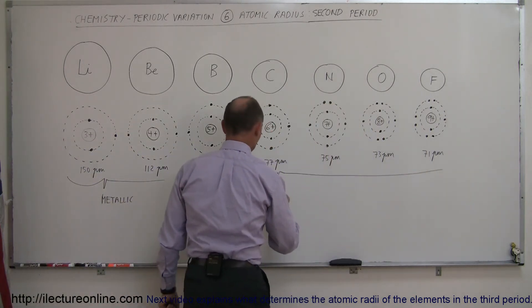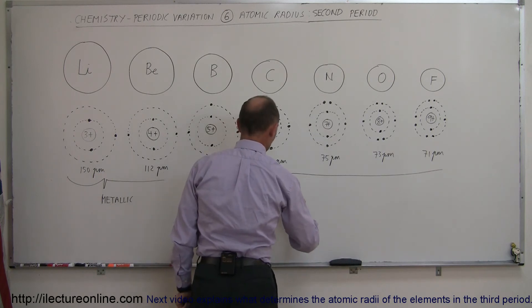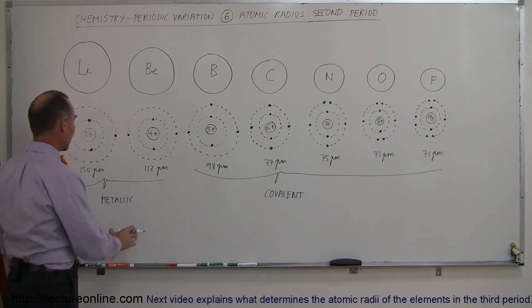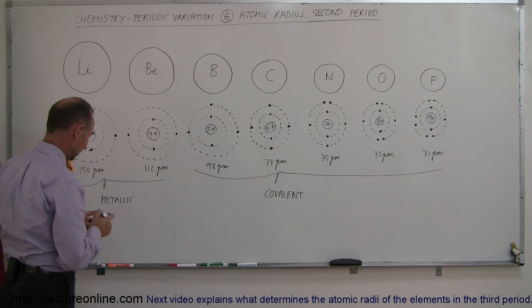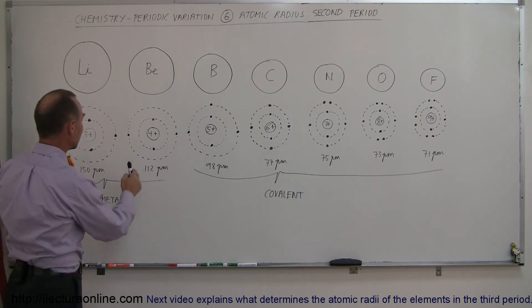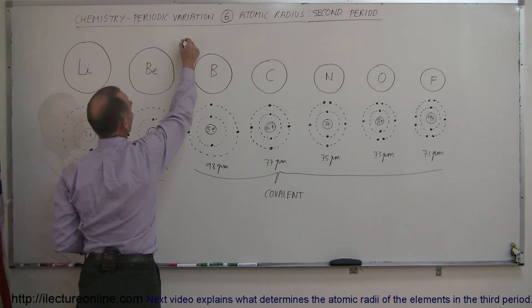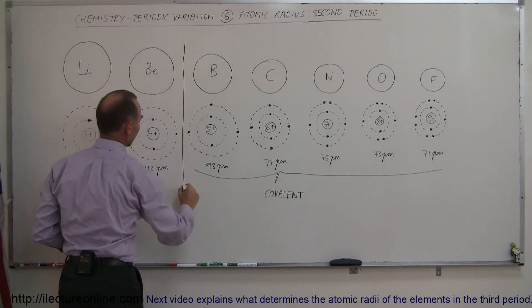So we did use a different measuring technique to measure the radius of these various atoms. It's more convenient from a practical perspective to do the metallic because these form nice metallic shapes, and so we can easily measure the volume of a metallic block of lithium or beryllium, and we can draw a line in between here to make it easier to understand.